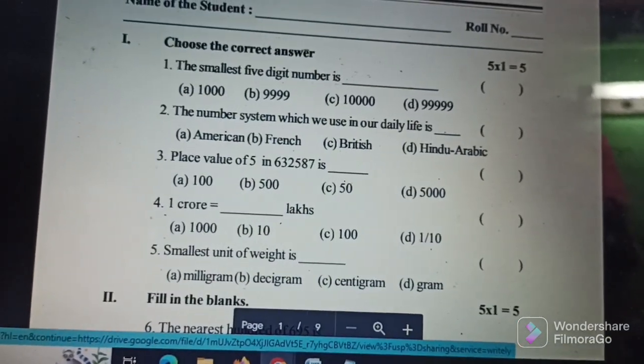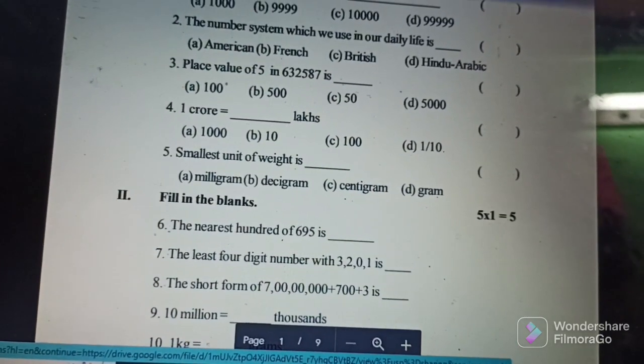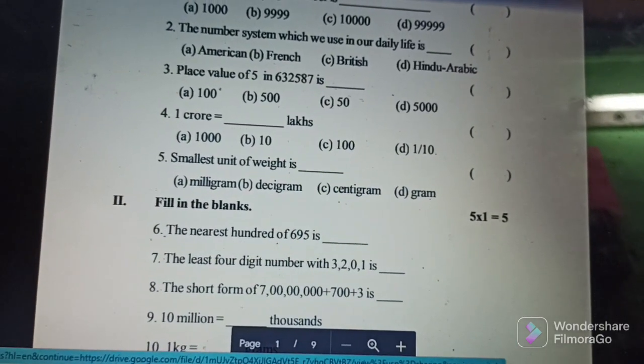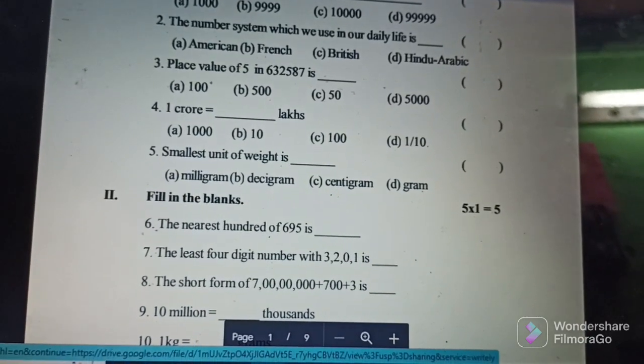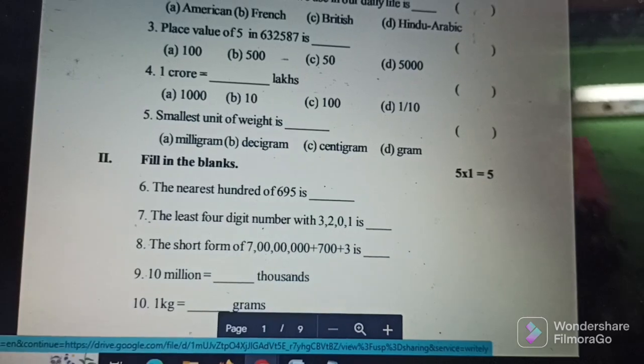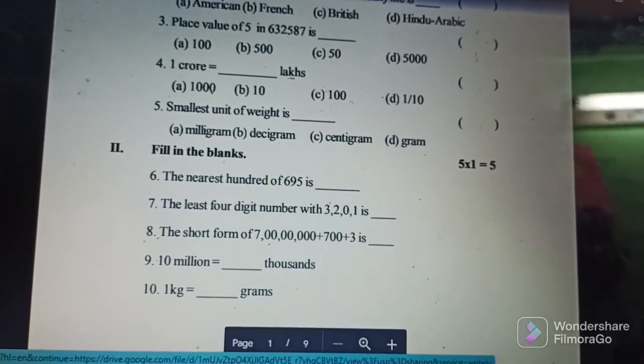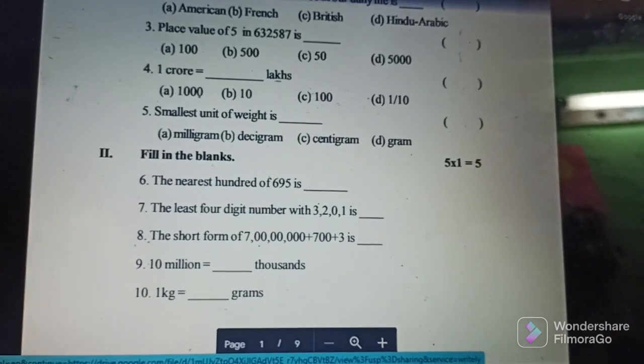First one is to choose the correct answers, 5 marks. Then fill in the blanks: The nearest hundreds of 695, the least 4 digit number with 3201, the short form of 4 10 millions equals dash thousands, 1 case equals dash grams.